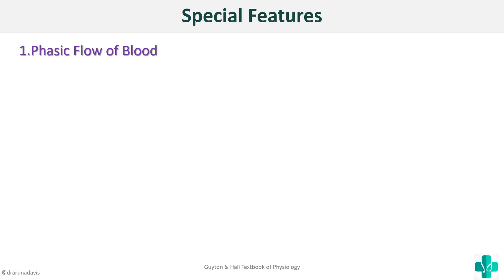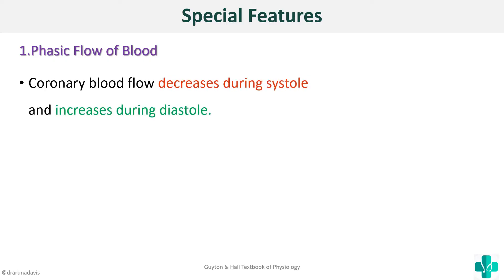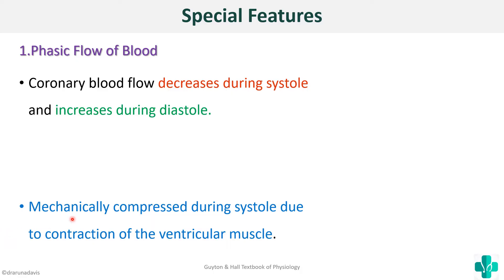Now moving on to the special features — what makes coronary circulation special. The first one is phasic blood flow. Coronary blood flow decreases during systole and increases during diastole. Why does it decrease during systole? When the heart pumps out blood, most organs receive more blood, but the heart itself receives less blood supply during systole. This is because the coronary vessels are mechanically compressed during systole due to the contraction of the ventricular muscles.